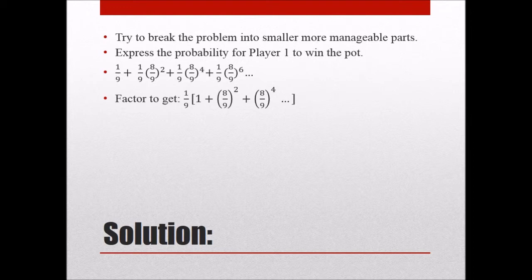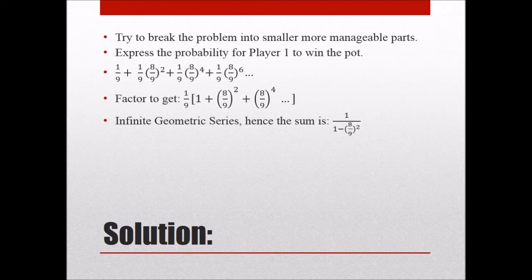I mean, obviously they're going to get the roll sometime, probably in less than a million rolls, but they might roll to a million or even beyond that. So for the sake of this example, this is an infinite geometric series. So that being the case, the sum is one over one minus r. And in this case, r was eight over nine squared.